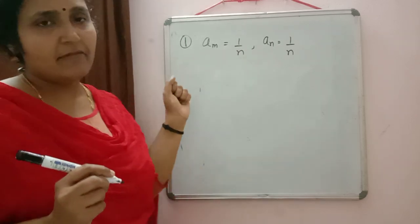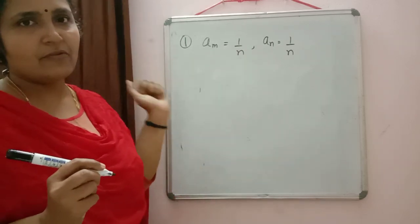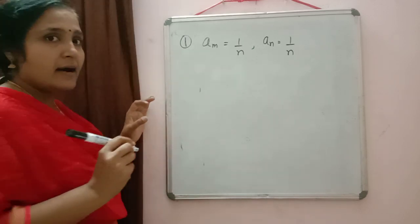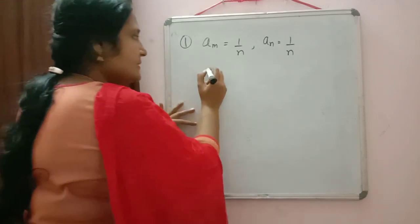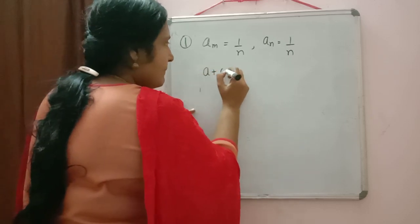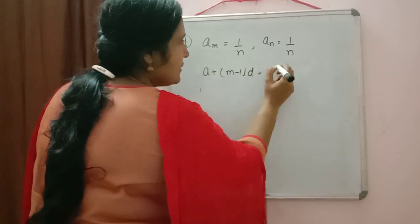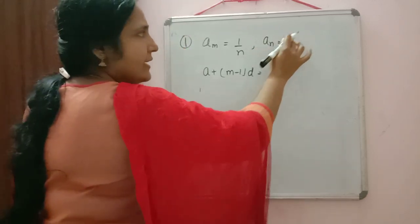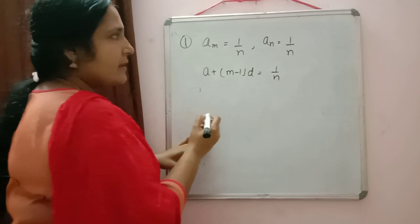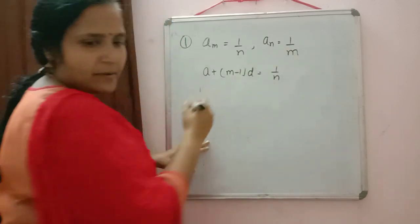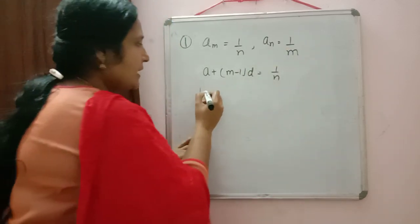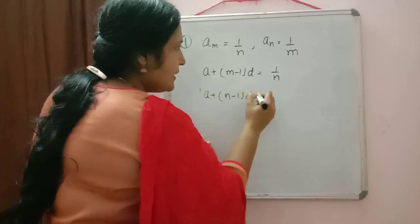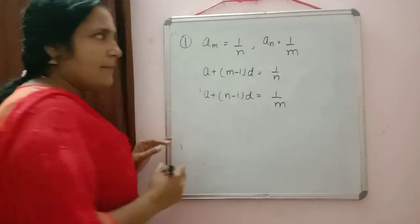From these two pieces of information, we will calculate the values of A and D. The formula gives us: A plus (M minus 1) into D equals 1/n, which is equation one. And for AN equals 1/m, we write: A plus (N minus 1) into D equals 1/m, which is equation two.